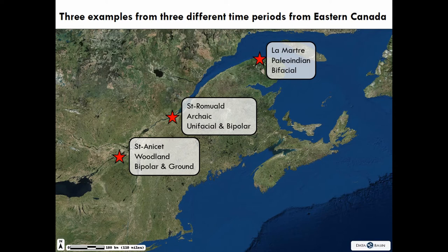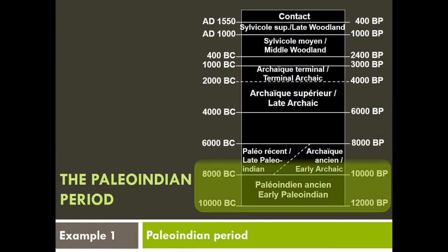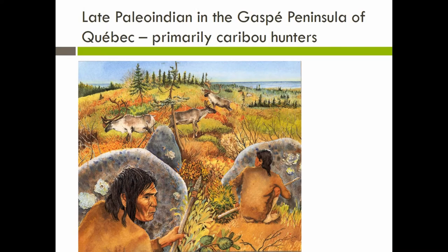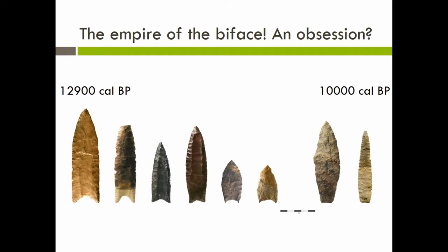I'll give you three examples: one from the Paleoindian period, the oldest period, where it's really dominated by bifacial technologies; one from the Archaic period, where there's a radical change to unifacial bipolar technologies; and then one from the later Woodland period, which involves groundstone and some chipstone tools. The Paleoindian period is the first colonization of North America. In Quebec, the late Paleo-Indian is a period when people are still hunting caribou in periglacial settings, nine to ten thousand years ago. It is the kingdom, the empire of the biface.